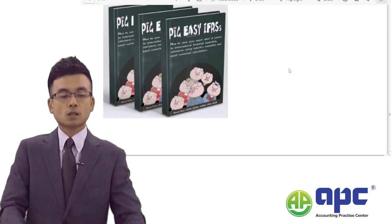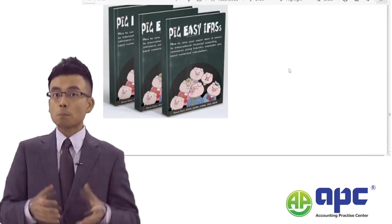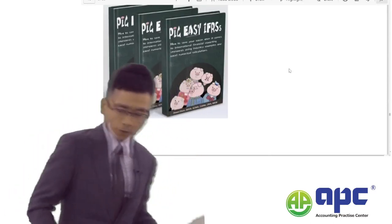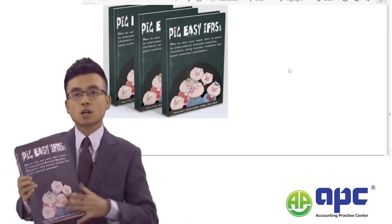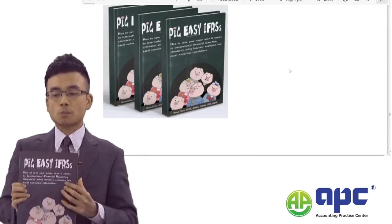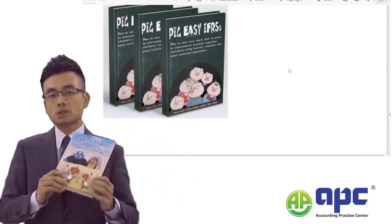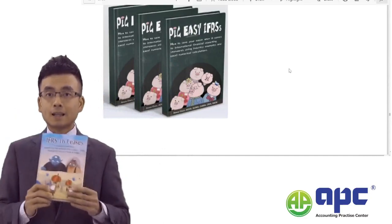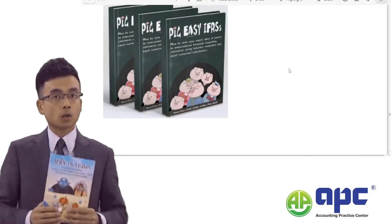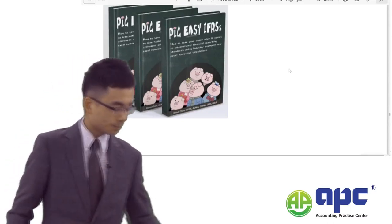You can buy these books from bookshops in Hong Kong or from my company's website, and you can even borrow them from Hong Kong's library. The first book covers Pick Easy iAdvice applications with lots of practical examples to help with your SBR exam. The second covers IFRS 16 Leases, with practical examples of applying the standard in real business, which will also help with your SBR exam.